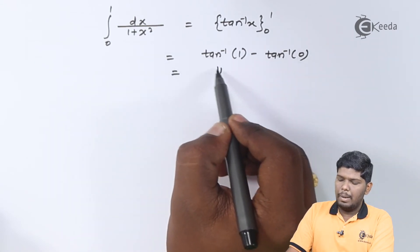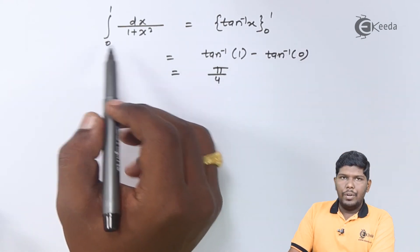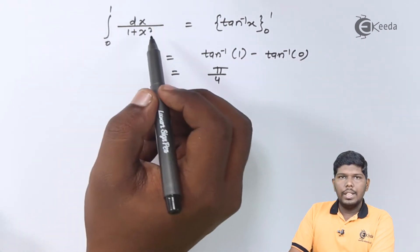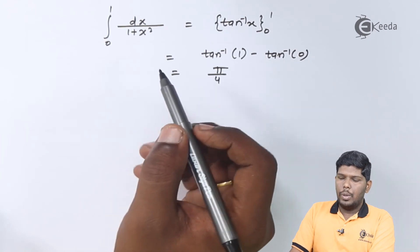And after substituting upper and lower limit, we have tan inverse of 1 minus tan inverse of 0. Now, tan inverse of 1 is equal to pi by 4. And tan inverse of 0 will be 0 only. So, if we directly solve this integral, we have the answer pi by 4. And if we solve this integral using trapezoidal rule, the answer which we are getting is 0.7828.